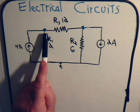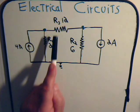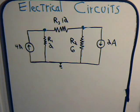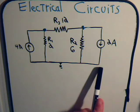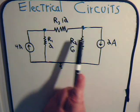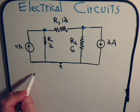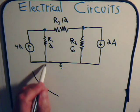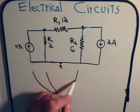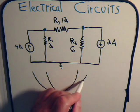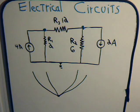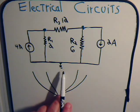Here we have this branch, this branch, and this branch that form node one. Then here we have this branch, this branch, and this branch that form node two. Down here at the bottom, all of these come together — we could draw the bottom part of the circuit simply as all of them coming into a single node, and that node is grounded.